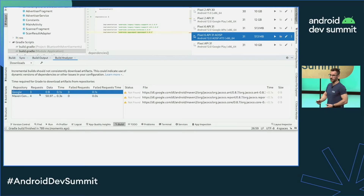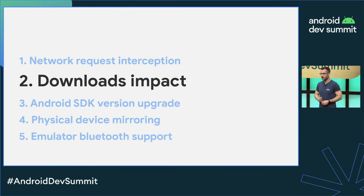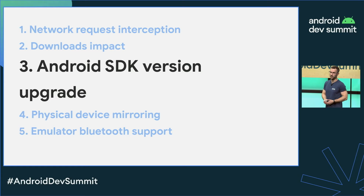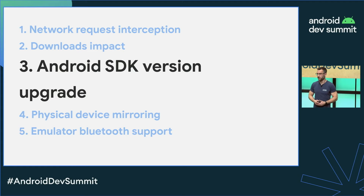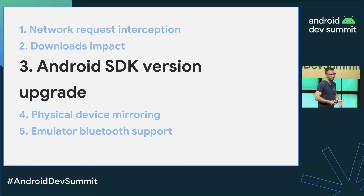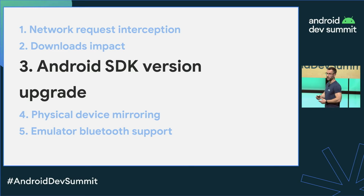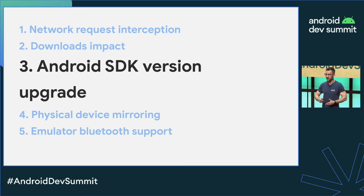For number three, I want to show you an early glimpse at the Android SDK Version Upgrade Assistant that you might have seen at the keynote already. It's a tool that helps you target the latest Android OS versions, ensuring that your users always get the best quality, security, and privacy in your apps when they update.